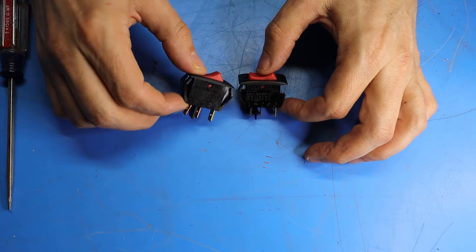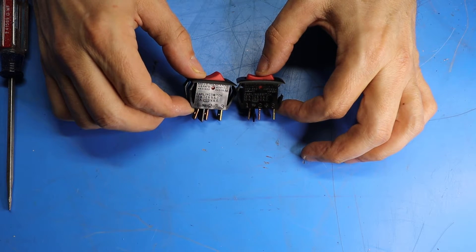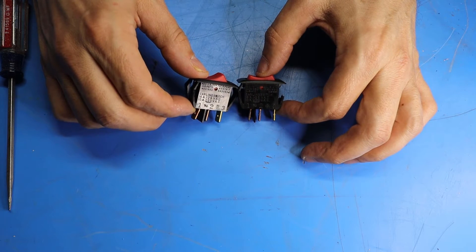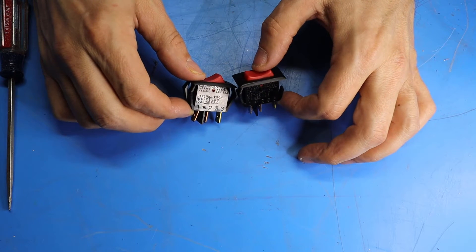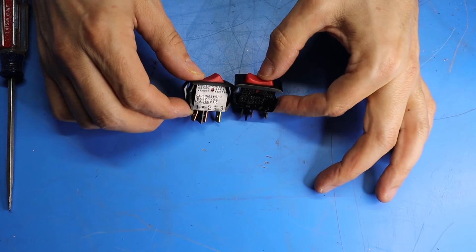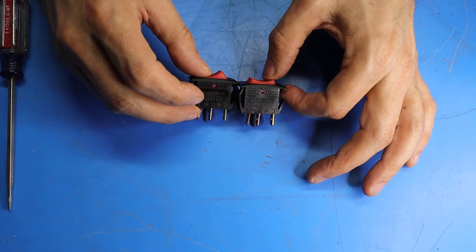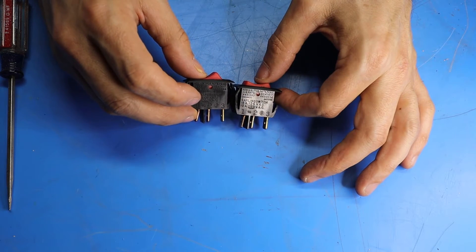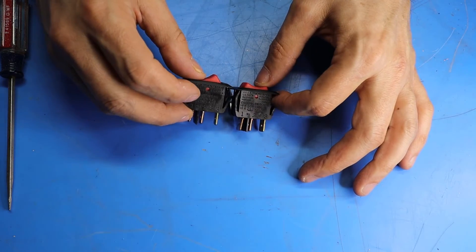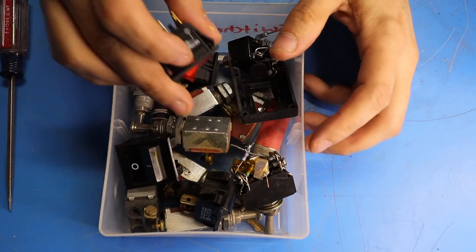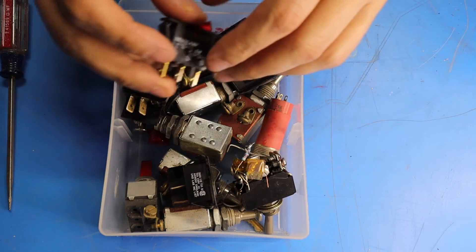So here's the two switches, the good one and the bad one side by side. If I get this spun right, you can see in the light that these are both Carling branded switches and they are both rated for 16 amps at 125 volts. Now there isn't an exact part number on here, but at this point I could go online and try and do some research to find a suitable replacement switch.